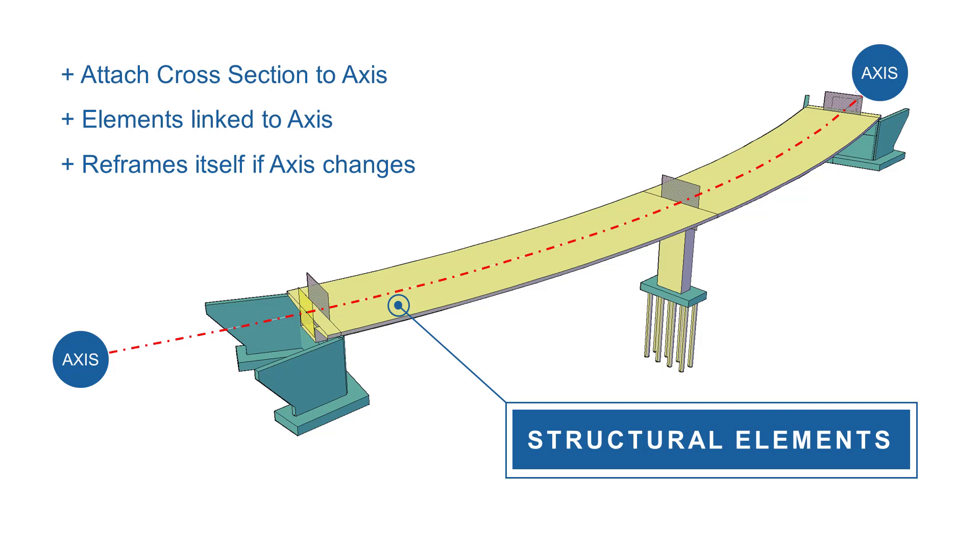But often bridges require post-tensioning. So how does the tendon creation fit into the parametric modeling? We learned so far that the geometric axis is the backbone of the entire parametric modeling process.